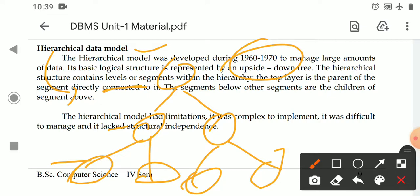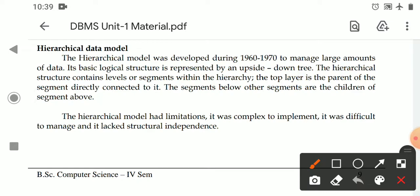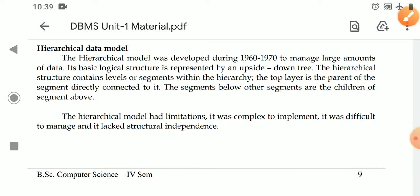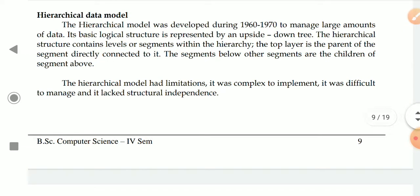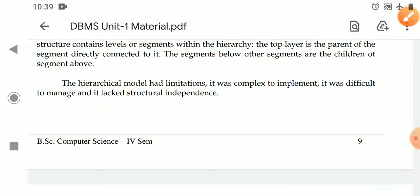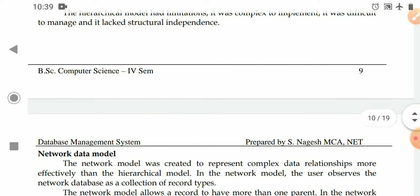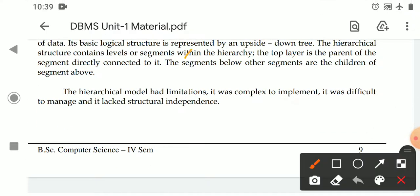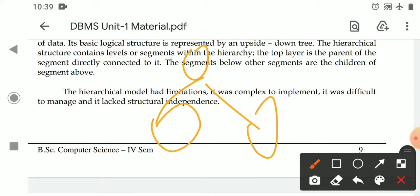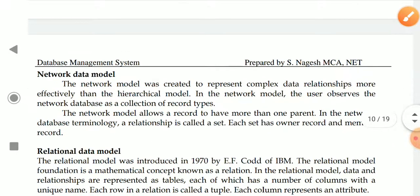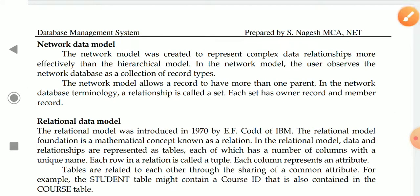In the hierarchical structure, the top layer is the parent of the segment directly connected to it. Segments below other segments are children of the segments above. The hierarchical model has complexity to implement — it was very difficult to manage, and it also has some structural dependencies, meaning a lack of structural independence. Simply put, in the hierarchical model the data is represented in a tree-based format.